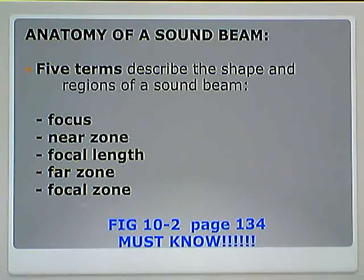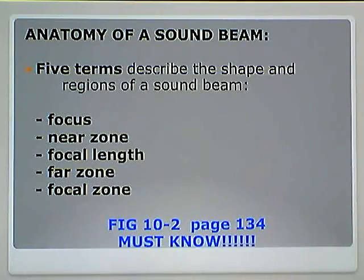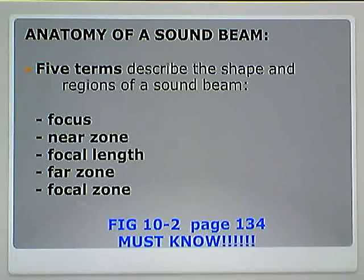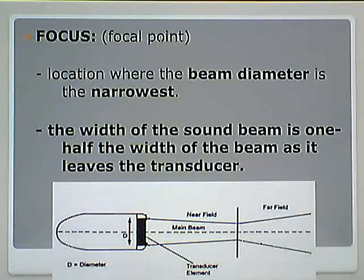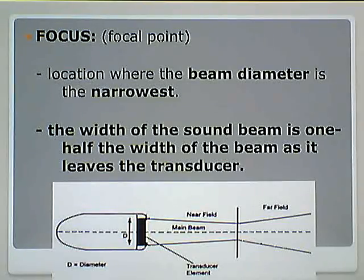When I think of focus, I think of a specific point or place. There are three zones — those are areas — and a focal length is a distance from one point to the next. The focus, or focal point, is the location where the beam diameter is the narrowest. The width of the sound beam at the focus is one-half the width of the beam as it leaves the transducer. What's the narrowest part of the beam? The focus. At what location is the beam diameter one-half the width as it started? The focus.